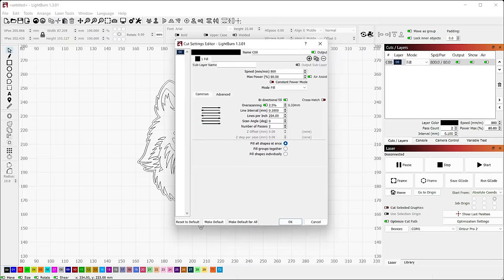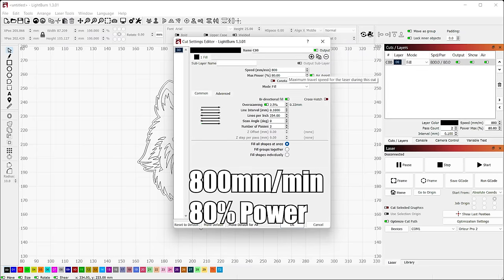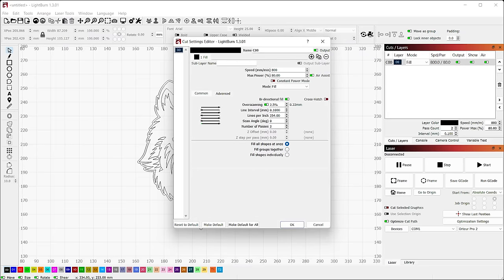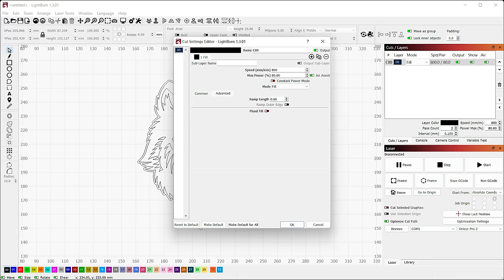So I'm going to come over here. We've got 800 millimeters per minute, and I'm running at 80% power. I am running two passes bidirectional fill with 2.5% overscanning, and on the advanced tab, I'm going to turn on flood fill.